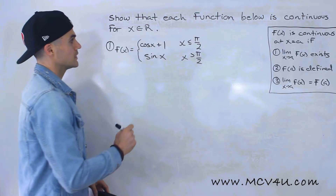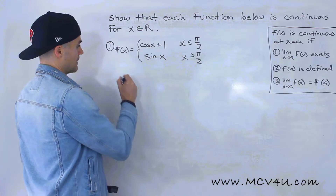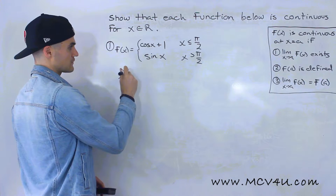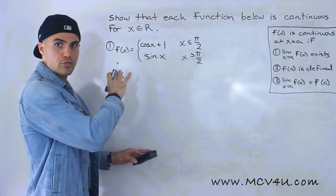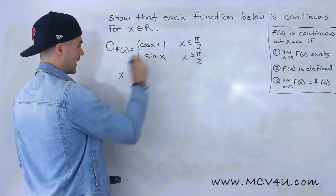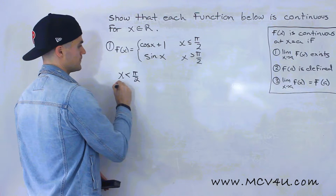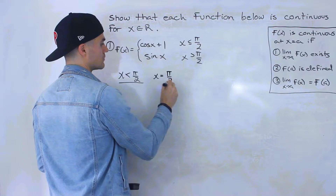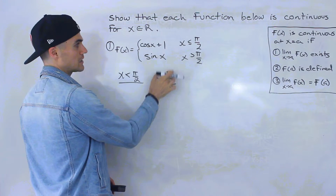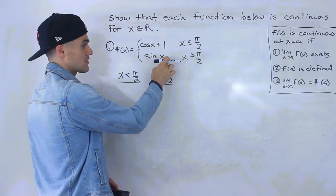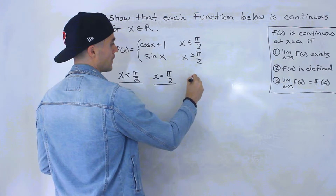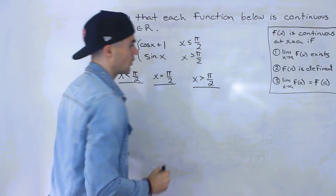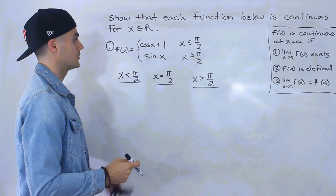What I'm going to do is show this piecewise function in three different spots: when x is less than π/2, when x equals π/2 — that's the meeting point between these two pieces — and when x is greater than π/2. I'll also make a graph while we're doing the function.